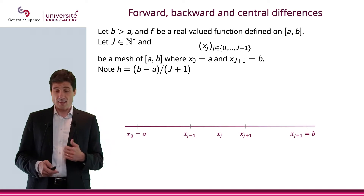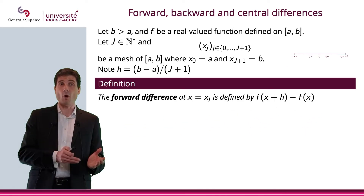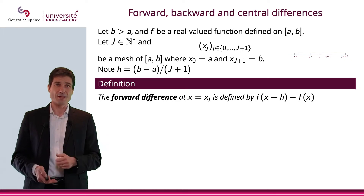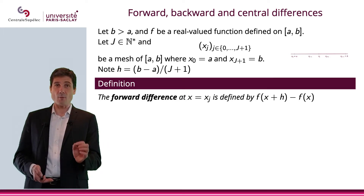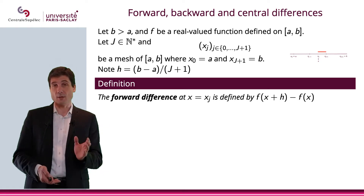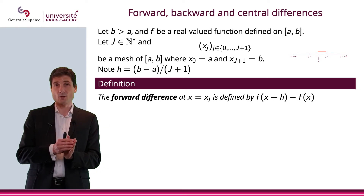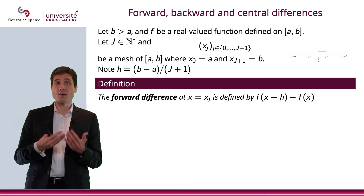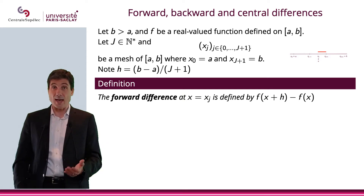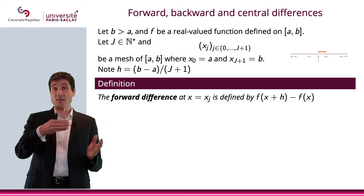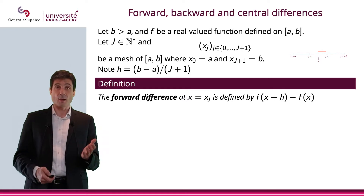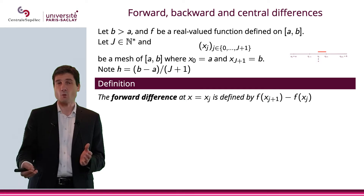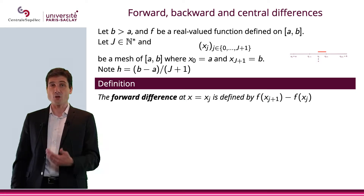Now that this is defined, let me define what is the forward difference at a point x of the grid. x will be equal to x_j since it is on the grid, and I will choose not to consider x_{j+1} — the last one, I won't take b. The forward difference at x will be defined simply as f(x+h) − f(x), or equivalently, f(x_{j+1}) − f(x_j).